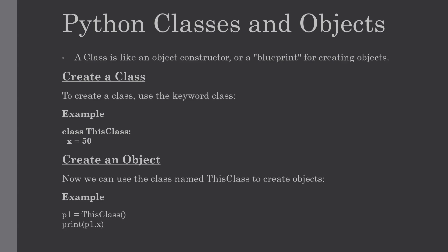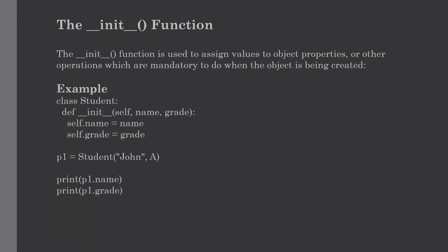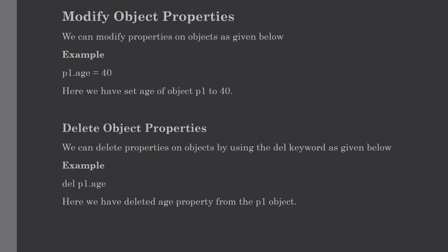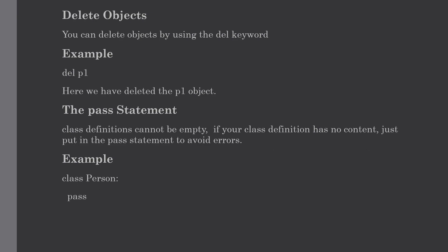Hello everyone, welcome to my channel. This is the continuation of our previous tutorial where we discussed all about classes and objects — how to create a class, how to create an object, what is an init function and why we use it, and what are the object methods with some simple examples. In this lecture we are going to see how to modify or delete the object and how to use the pass statement with some simple examples.